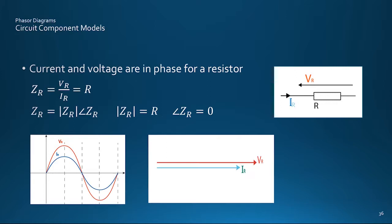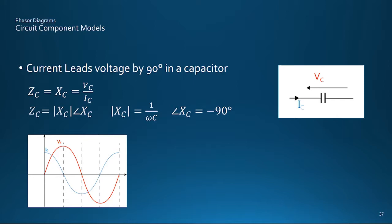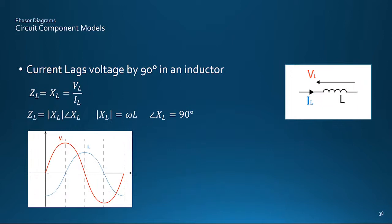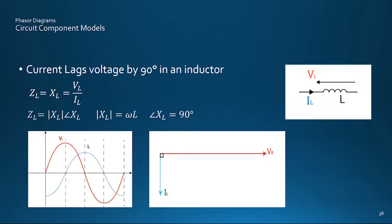Now applying phasors to circuit components, starting with a resistor, where voltage and current are in phase but with different magnitudes, they can be drawn like this. For a capacitor, the current leads the voltage by 90 degrees, so the picture is like this. And for the inductor, the current lags the voltage by 90 degrees.